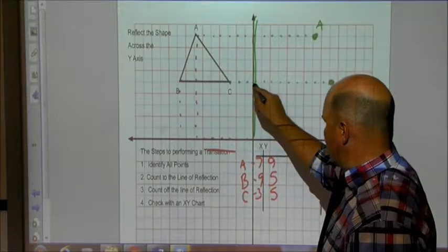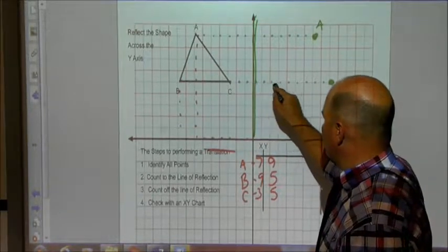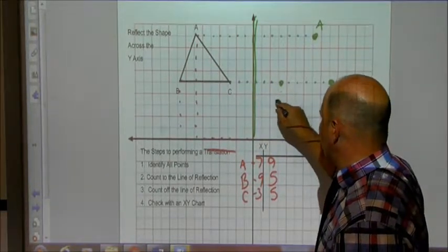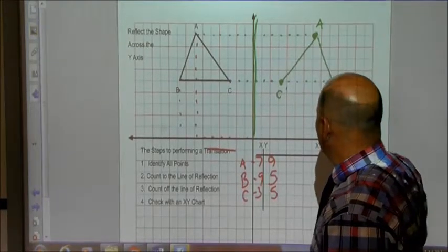And C is 1, 2, 3 to my line of reflection. So I need to go 1, 2, 3 off my line of reflection to get C prime. And that's my new shape.